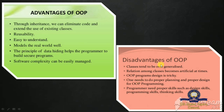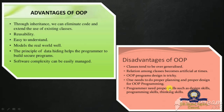Now let's see the disadvantages of object oriented programming language. First: Classes tend to be over-generalized. Second: Relations among classes become artificial at times. Third: Object oriented program design is tricky, and one needs proper planning and design. Fourth: Programmers need proper skills such as design skills, programming skills, and thinking skills.